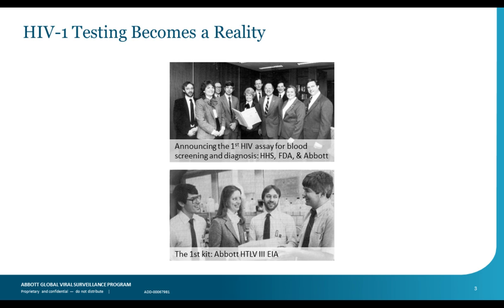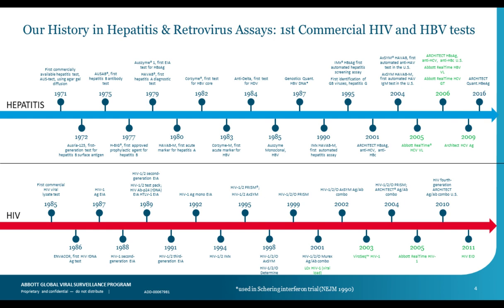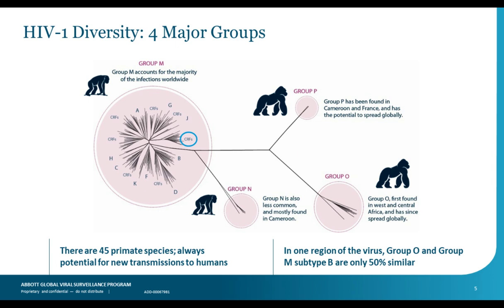This slide shows Abbott's legacy in HIV. These photographs show the teams that developed the first-ever FDA-approved HIV assay. Two people in the center — Robin Gutierrez and George Dawson — are still part of the team today developing HIV, hepatitis, and other infectious disease assays. Abbott launched the first-ever HIV assay in 1985, and significantly earlier in the early 70s, the first hepatitis B surface antigen assay. We continue to innovate, and you can see all the different hepatitis and HIV assays developed and launched throughout the decades.